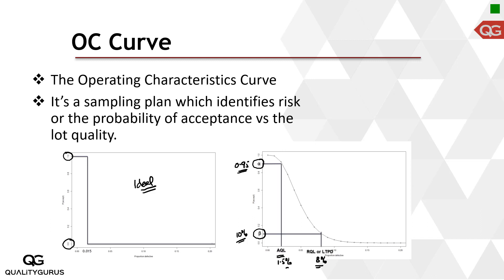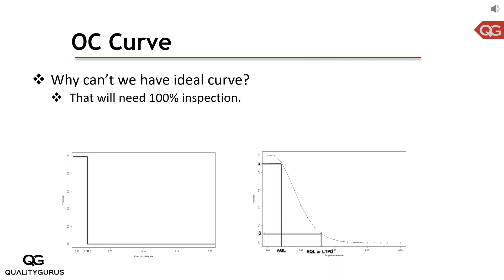These four values — AQL, RQL, alpha, and beta — define two points that determine the shape of the OC curve. Once you have these four numbers, you can plot an OC curve. You might ask: why can't we just use the ideal curve? The answer is that the ideal curve requires 100% inspection.